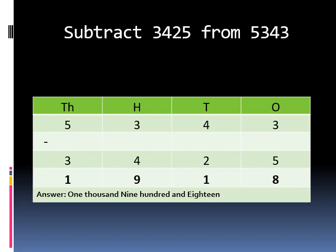Subtract 3,425 from 5,343. Here we have to take 5,343 as first number and 3,425 as second number. So, let's start subtracting.